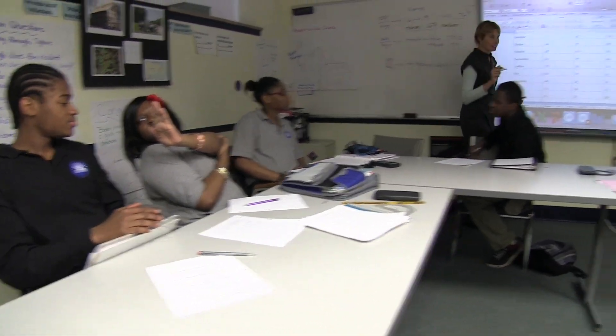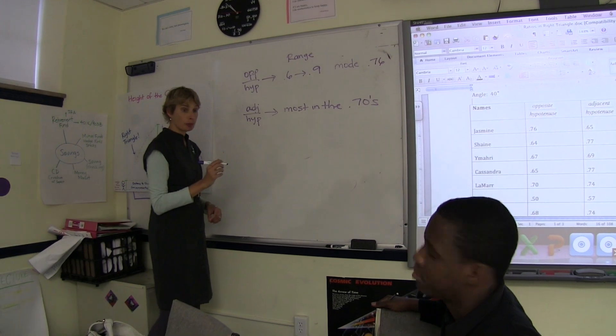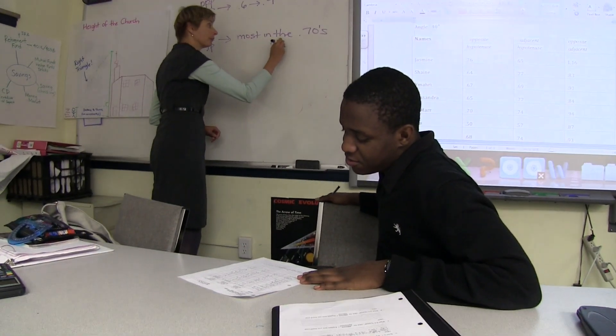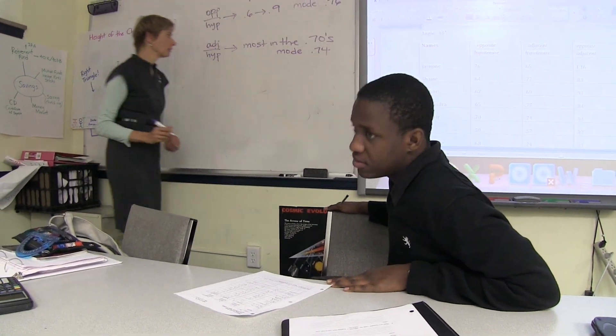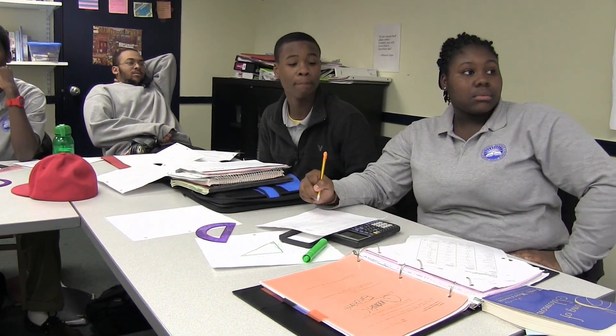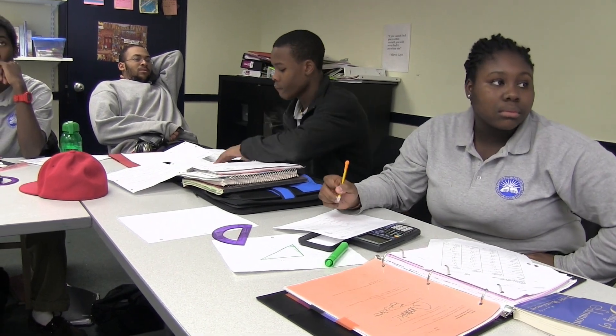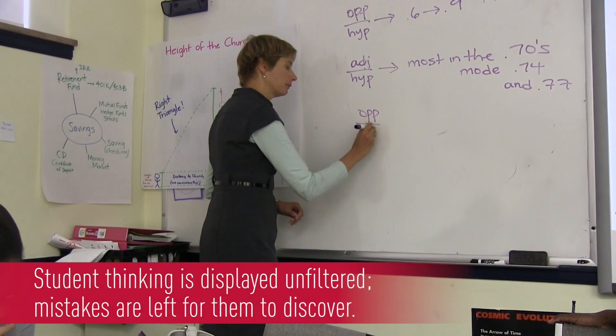Oftentimes when I'm at the board, I'm just recording what the groups are telling me. To me, it's okay if wrong things — errors — are put on the board, because we're all going to be looking at it. Malik, what's the mode? .74. Mode is .74. And .77. It makes everybody engaged, trying to figure out if what's up there is right and makes sense with the patterns that we're finding.